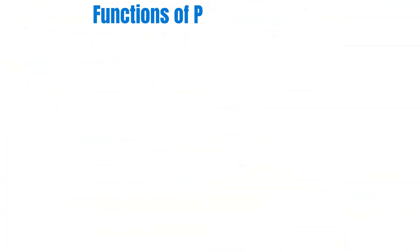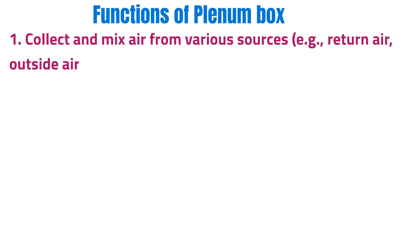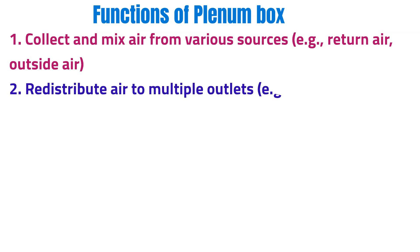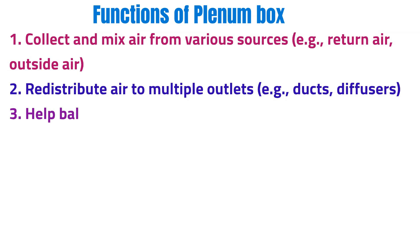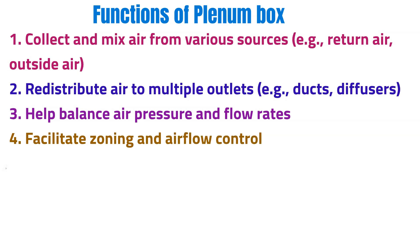The functions of a plenum box are: 1) collect and mix air from various sources such as return air and outside air; 2) redistribute air to multiple outlets such as ducts and diffusers; 3) help balance air pressure and flow rates; and 4) facilitate zoning and airflow control.